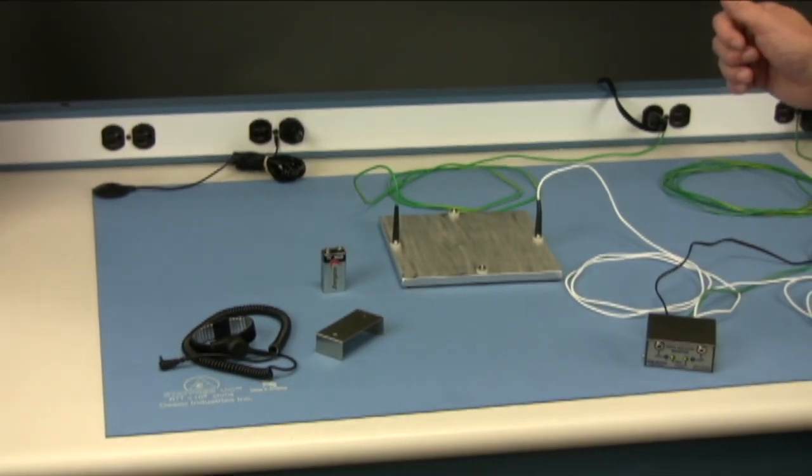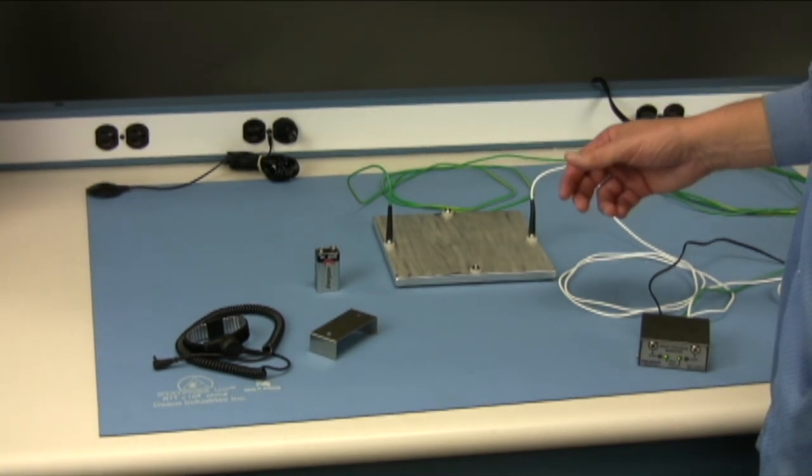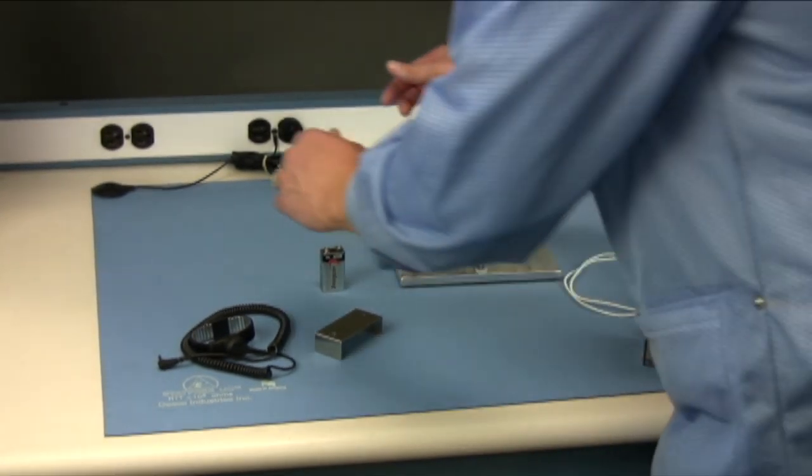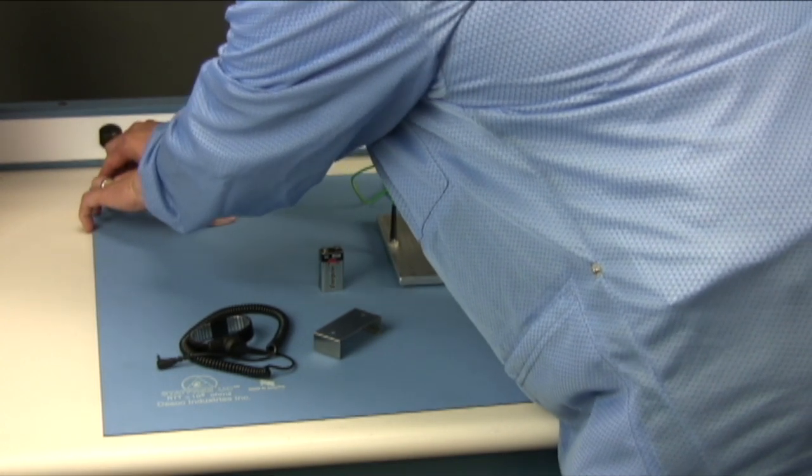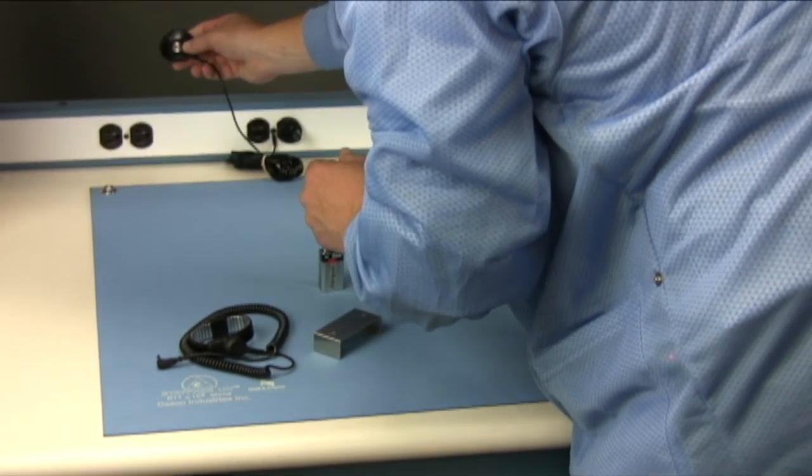We can demonstrate the mat ground monitor function by unsnapping the ground cord. The alarm will go off.